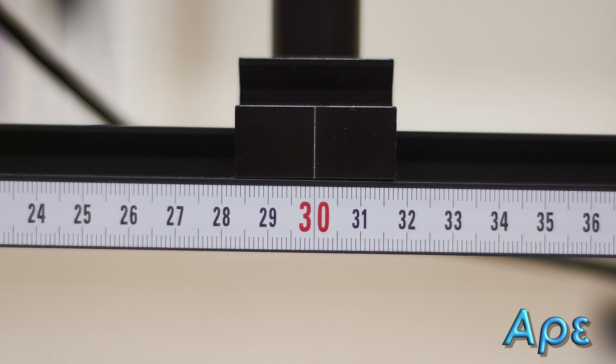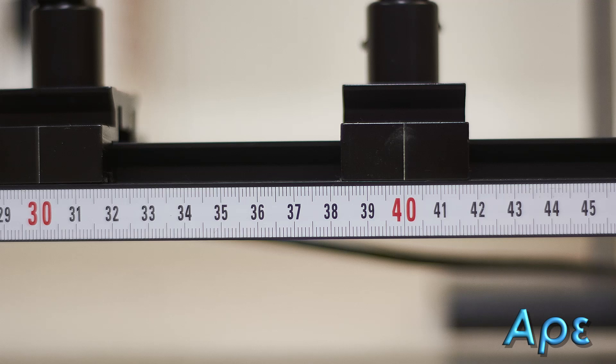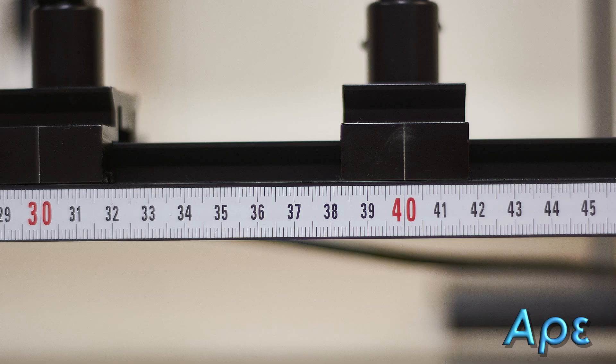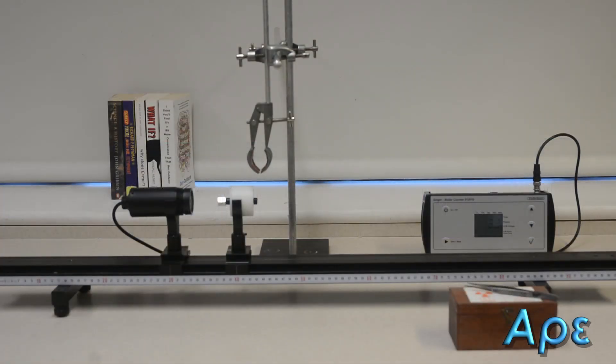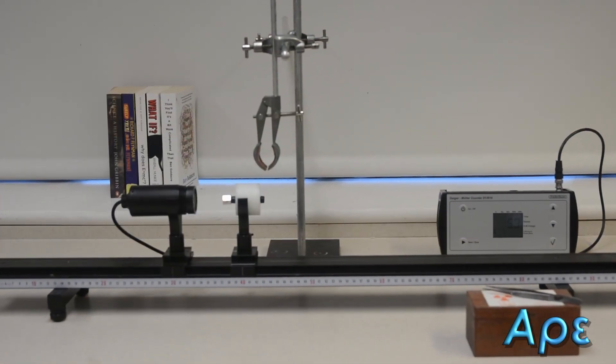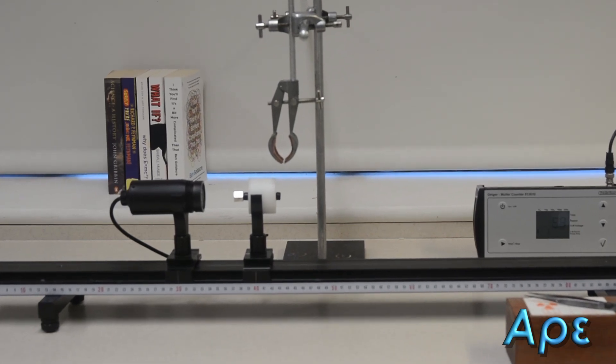Here we can see the base of the GM tube holder aligned with 30 centimeters and the base of the source holder at 40 centimeters. This does not mean that the edges of the GM tube and source are 10 centimeters apart. As seen in the video, they are both closer than their base markers. However, this will provide a baseline for the distances used.